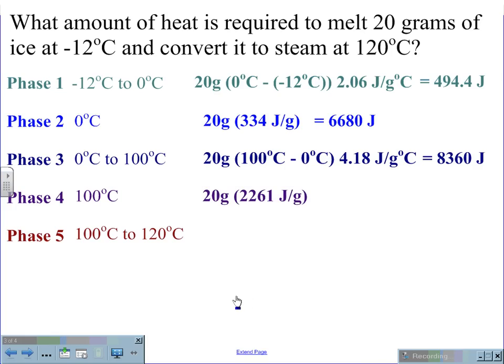At 100 degrees Celsius, 20 grams times 2,261 joules per gram. Again, at a horizontal phase change, there is no change in temperature. This gives us 45,220 joules.